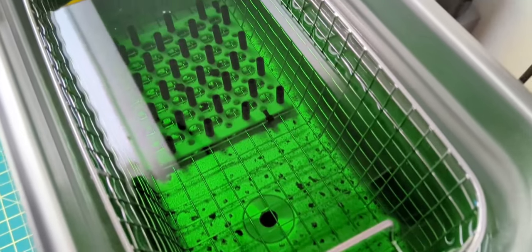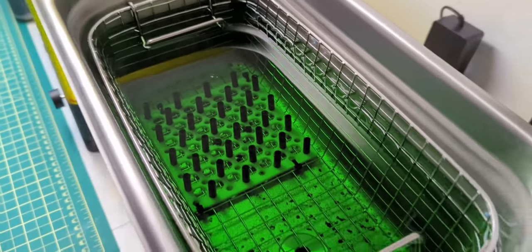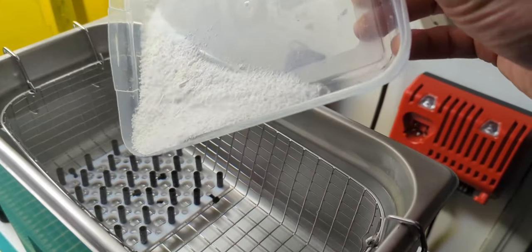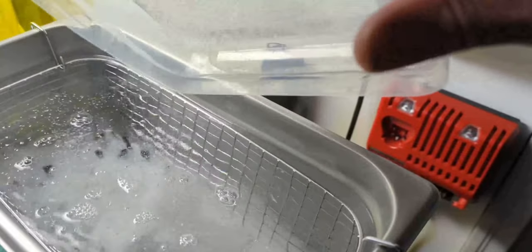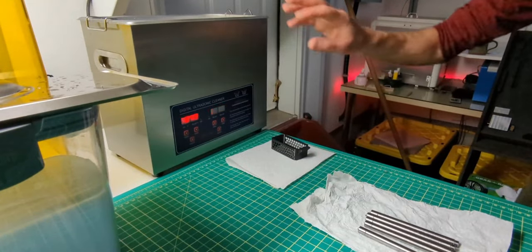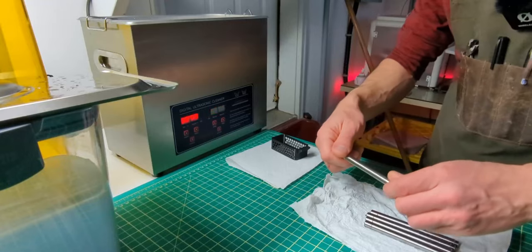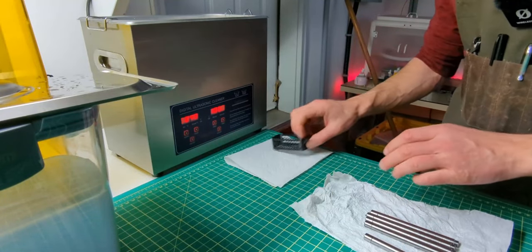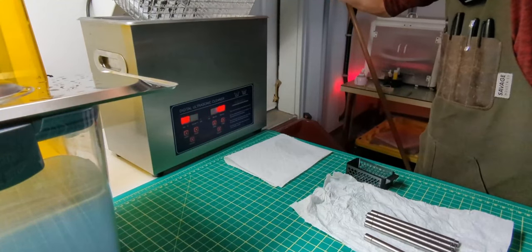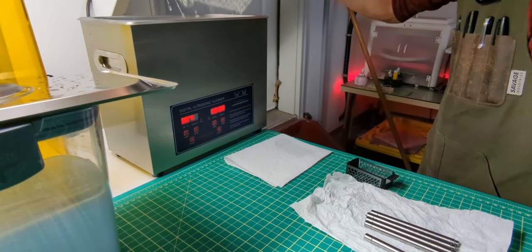This is my ultrasonic right now. It's filled with simple green. I've tried all kinds of different degreasers, but simple green has been my favorite to date. But I just got this Alkinox cleaner, which I'm really excited to try. So I'm filling up the tank with that because I think it'll be better. This is the Alkinox cleaner I bought, which is rather expensive for soap, but I'm hoping it'll help a lot for the final clean before anodizing.